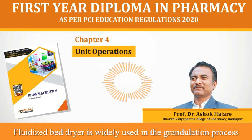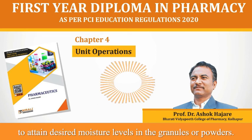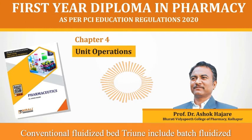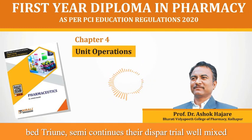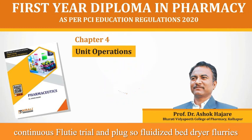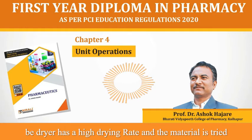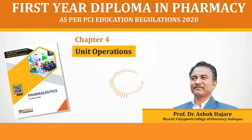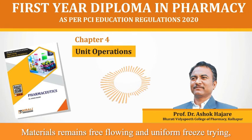Fluidized bed dryer is widely used in the granulation process to attain desired moisture levels in granules or powders. Conventional fluidized bed dryer types include the batch fluidized bed dryer, semi-continuous fluidized bed dryer, well-mixed continuous fluidized dryer and plug-flow fluidized bed dryer. Fluidized bed dryer has a high drying rate and the material is dried in a very short time, remaining free flowing and uniform.